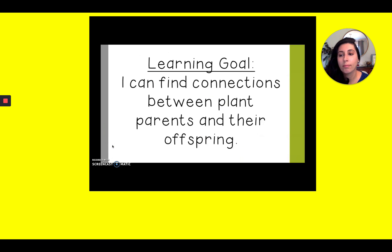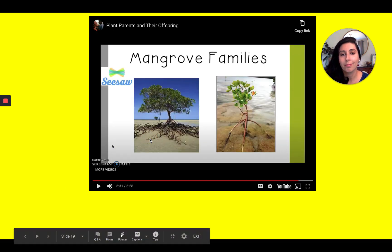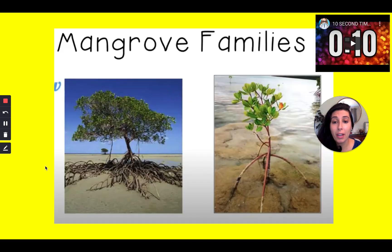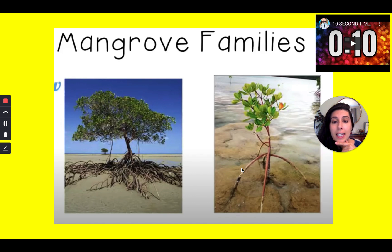Our learning goal says I can find connections between plant parents and their offspring, and that's what we've been doing. Now we are going to compare and contrast these two mangrove trees. Here is the adult mangrove and here is the baby mangrove, or the mangrove's offspring. Take a minute to notice what is the same about them. I want you to share three things that are the same between the adult and its offspring.